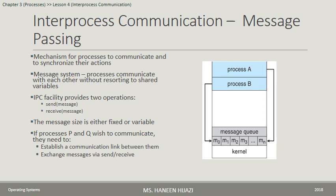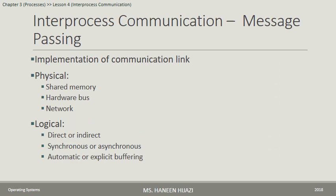Message passing is slower than shared memory because it is implemented using system calls (Send and Receive). If two processes want to communicate through message passing, there must be a Communication Link between them to exchange data via Send and Receive. This communication link can be physically implemented using shared memory, a hardware bus, or a network. Logically, the link can be direct or indirect, synchronous or asynchronous, and with automatic or explicit buffering.